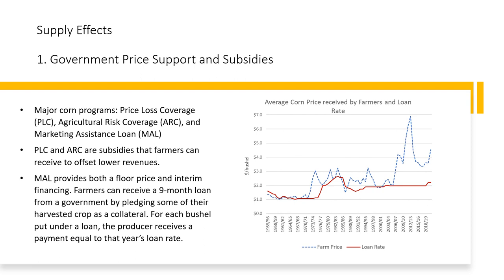Historically, the U.S. government has supported farmers' incomes through commodity price support, storage programs, and direct payments. The Farm Bill, a multi-year legislation, governs an array of agricultural and food programs. Major corn programs outlined in Title One of the 2018 Farm Bill include the Price Loss Coverage (PLC) and Agricultural Risk Coverage (ARC) programs, and the Marketing Assistance Loan (MAL) program. PLC and ARC are subsidies that farmers can receive to offset lower revenues, and producers can only choose to participate in either PLC or ARC.